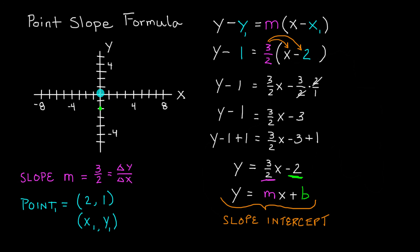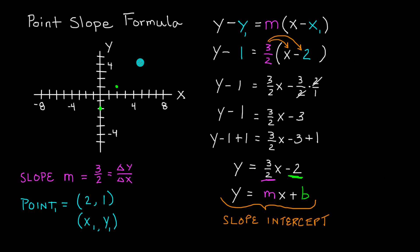Starting at the origin, we go 2 units in the x direction and then up 1 unit in the y direction to land on point (2, 1). To verify the slope, the change between the two points should match our slope of 3 over 2. We go 3 units in the positive y direction for every 2 units in the positive x direction — and sure enough, we land back on our line. So we can now draw the line by connecting those points.